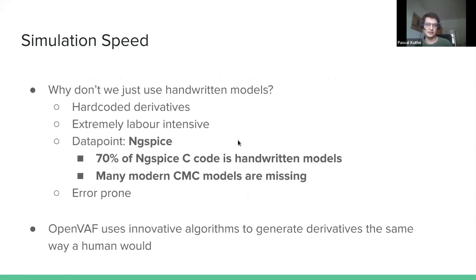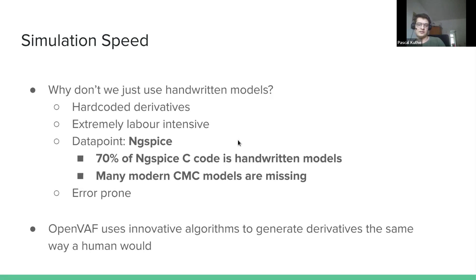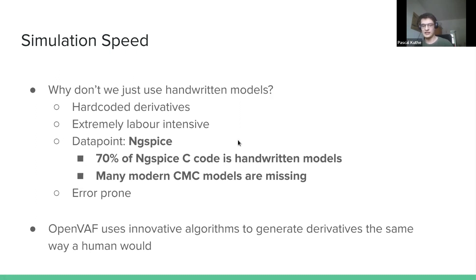When you hand-write a compact device model into a simulator, you need to do the laborious task of hard-coding all these symbolic derivatives — it's labor intensive and extremely expensive. An interesting data point: 70% of the C code in ng-spice are these hand-written models, all of which could in theory eventually be replaced with OpenVAF. That's adding to what Ken said — a large portion of creating a simulator is creating these models — and even with that, many modern CMC models are still missing from ng-spice. OpenVAF is able to come this close to hand-written code by using innovative algorithms to generate derivatives more or less similarly to how a human would, because OpenVAF has a much deeper understanding of the model source code in the compiler.